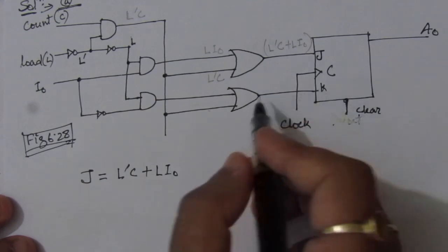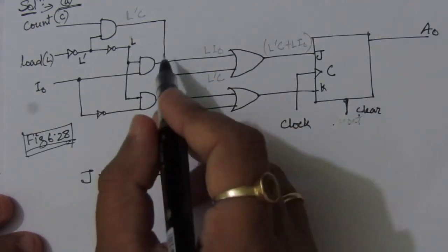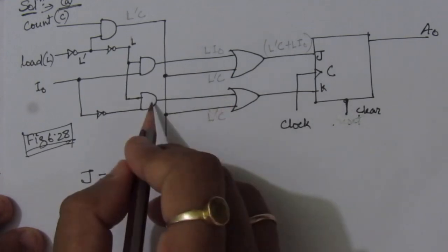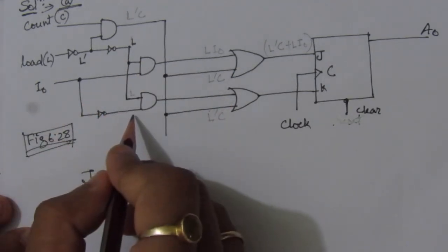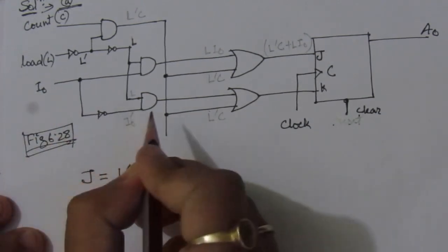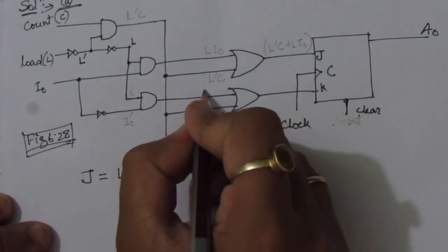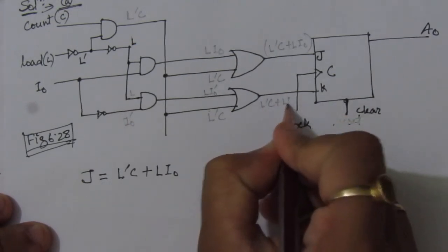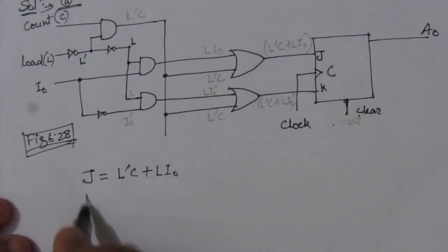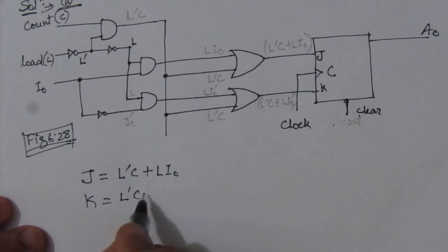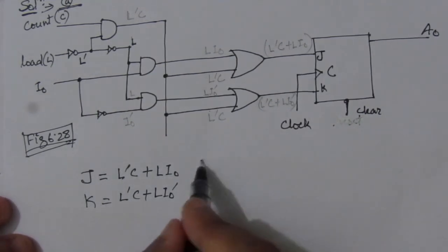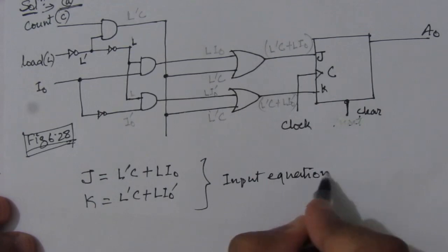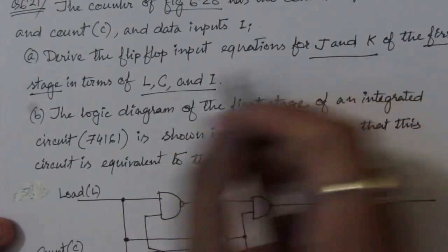Now we find the expression for K from the OR gate output. The second input is L-complement·C, and the first input comes from an AND gate with inputs L and I0-complement, giving L·I0'. Therefore K = L'C + LI0'. So we have both input equations for the flip-flop: J = L'C + LI0 and K = L'C + LI0'. This completes the first part of the problem.